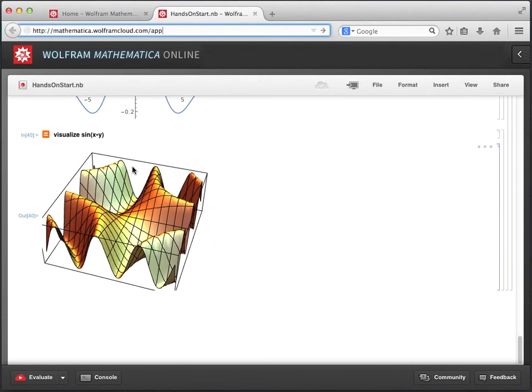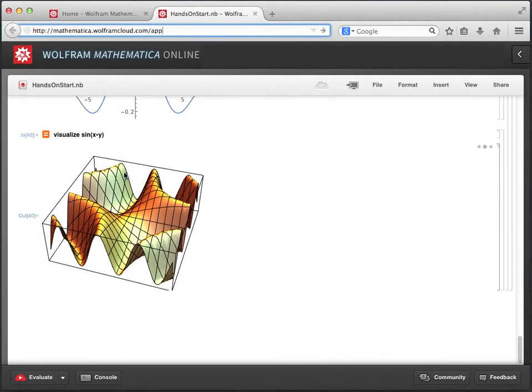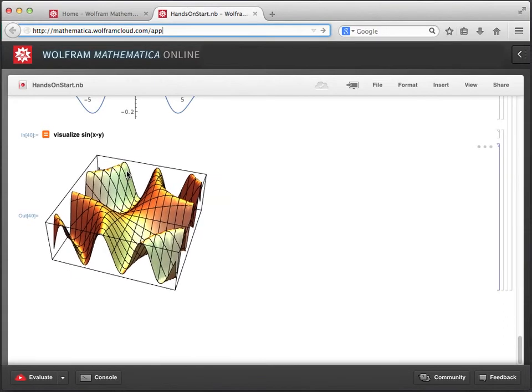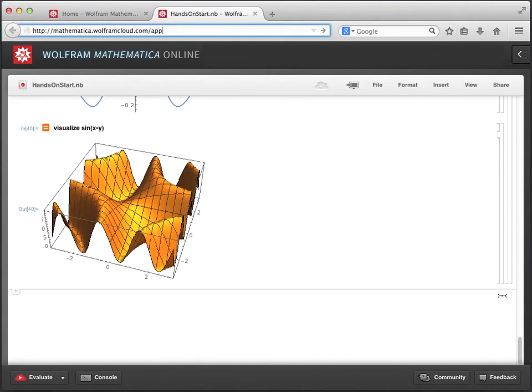You can also hold down the shift key and then click and drag which will pan the image around its cell. You can also graph multiple functions on the same set of axes. So let's now take a look at how to do that next.